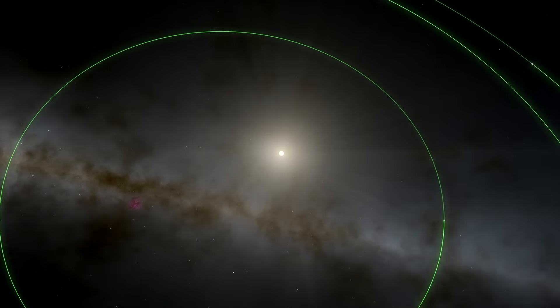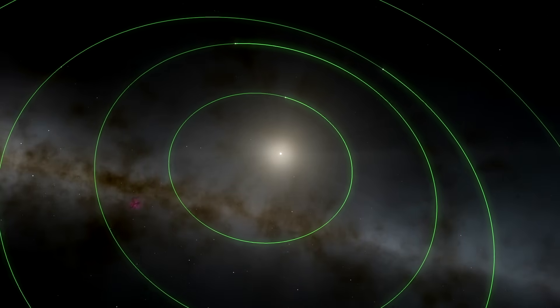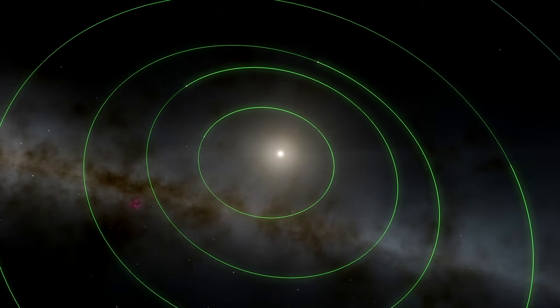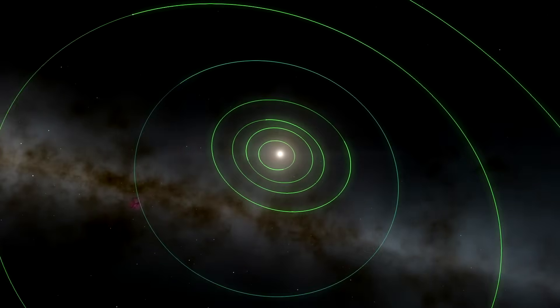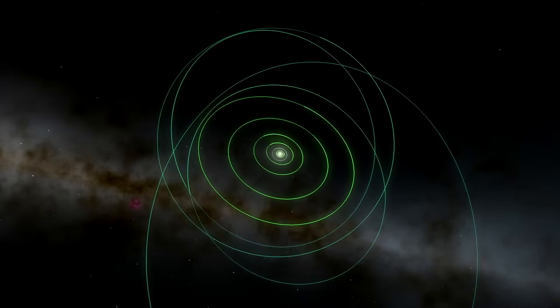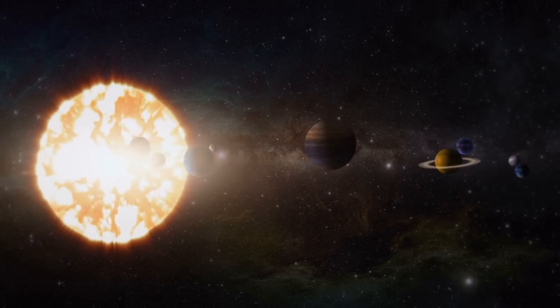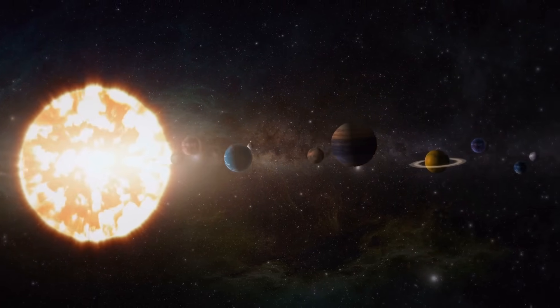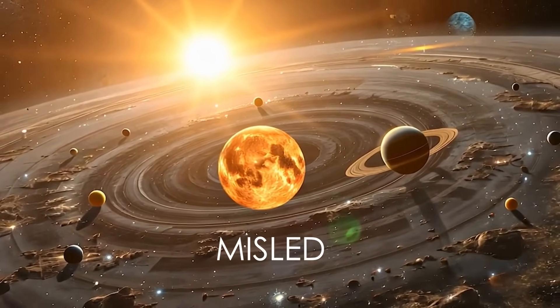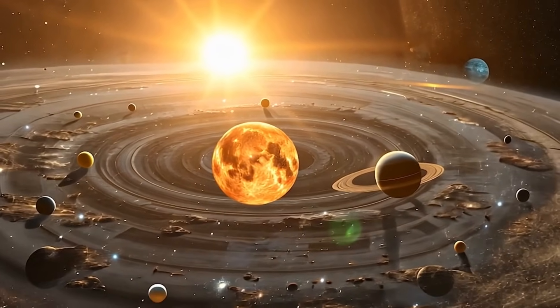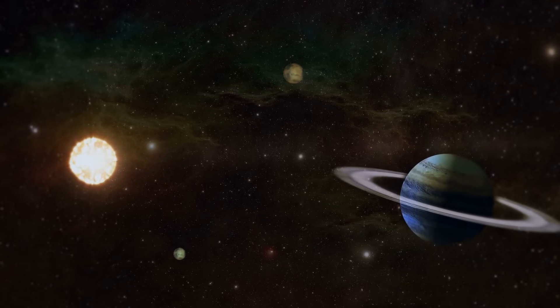This conceptual sleight of hand allows conventional astronomy to maintain the illusion of a tidy, orderly system when the reality is far messier and more chaotic. By establishing the ecliptic as the default reference frame, anything that doesn't conform to this flat model can be marginalized as an exception rather than recognized as evidence challenging the fundamental model itself. The implications are profound. If we've been misled about something as basic as the shape of our own solar system, what other cosmic truths might be oversimplified to the point of deception?